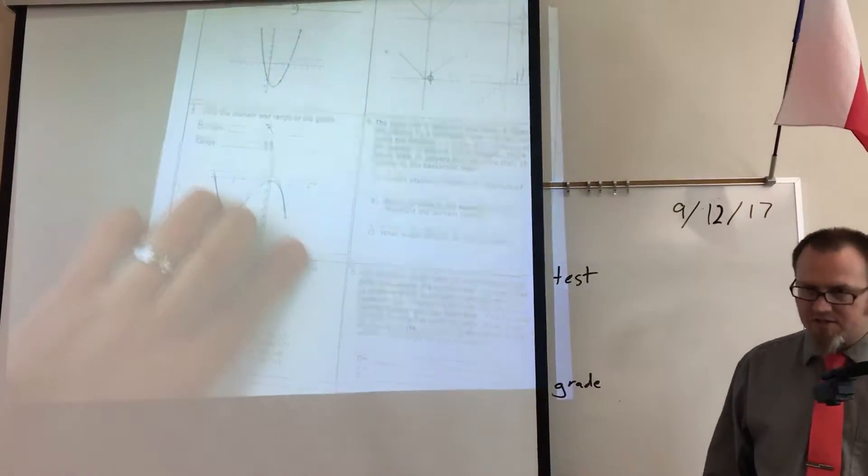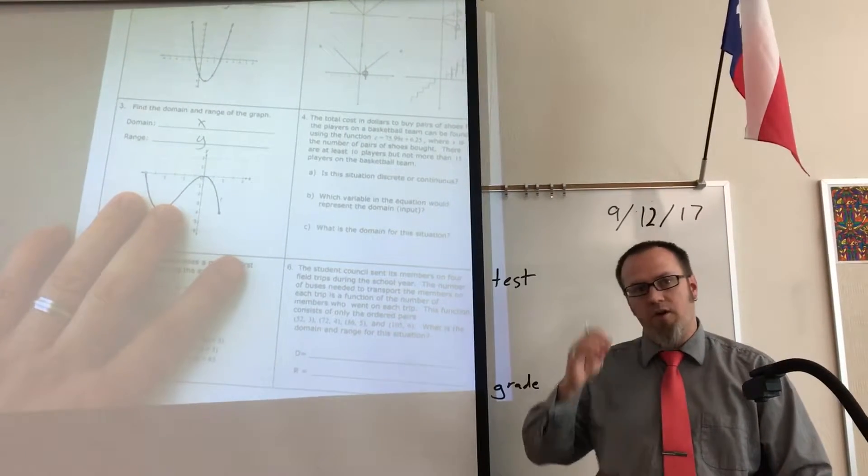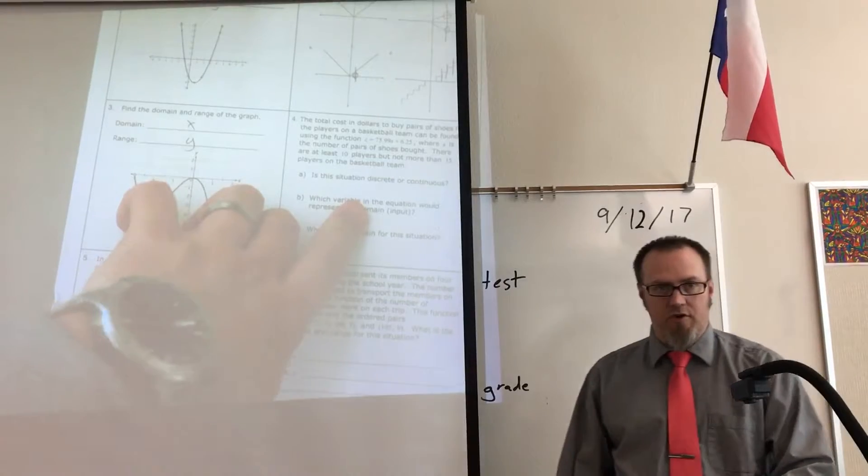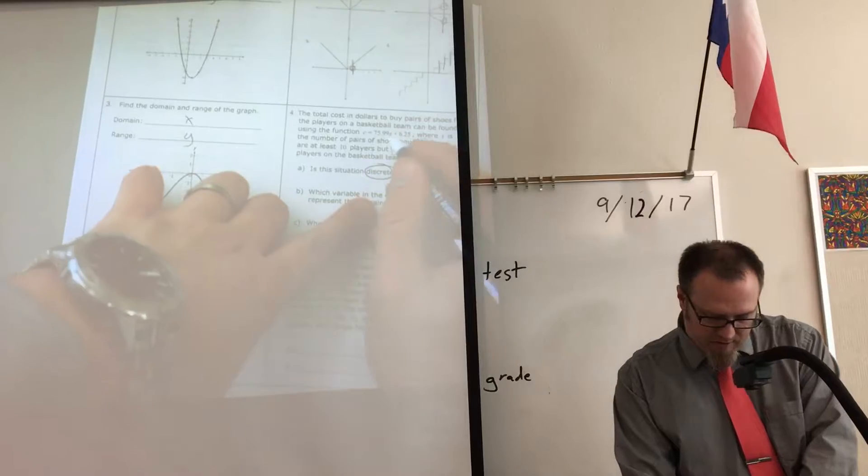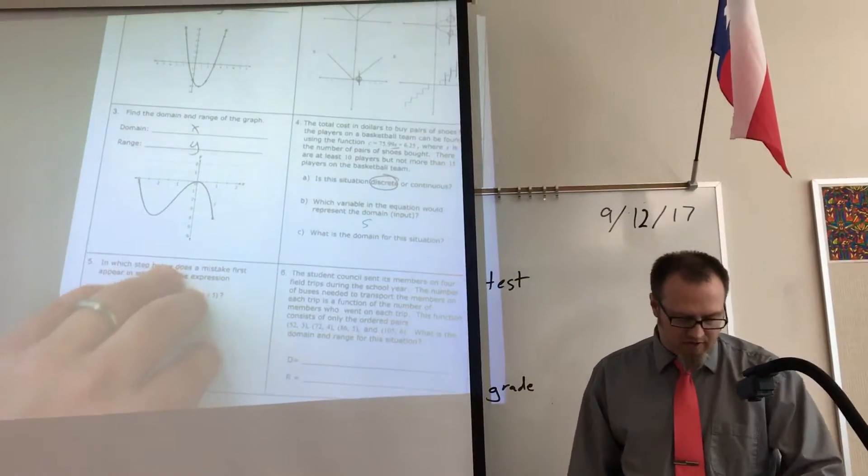On this one with the basketball team, you can't have a partial member of a basketball team. Even if somebody's handicapped, they're not 0.75 of a person. We don't have those partial values, so this is discrete. My input is going to be this one here, the number of shoes that I buy, because the cost depends on it.